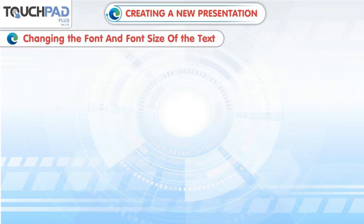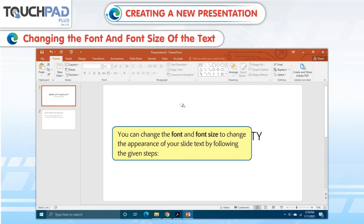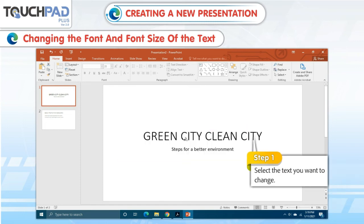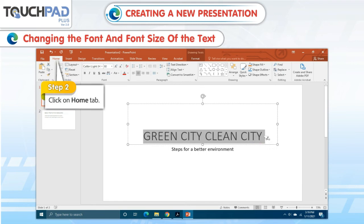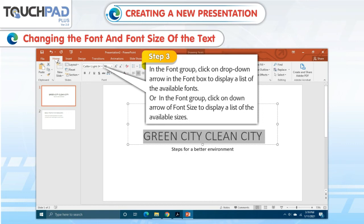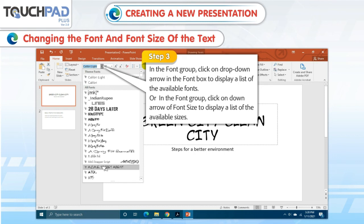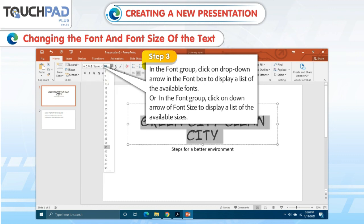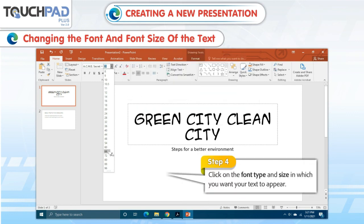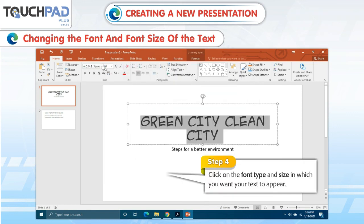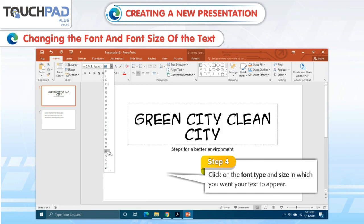Changing the font and font size of the text. You can change the font and font size to change the appearance of your slide text by following the given steps. Step 1: Select the text you want to change. Step 2: Click on the Home tab. Step 3: In the Font group, click on the drop-down arrow in the font box to display a list of available fonts, or click the down arrow on the font size to display a list of available sizes. Step 4: Click on the font type and size in which you want your text to appear.